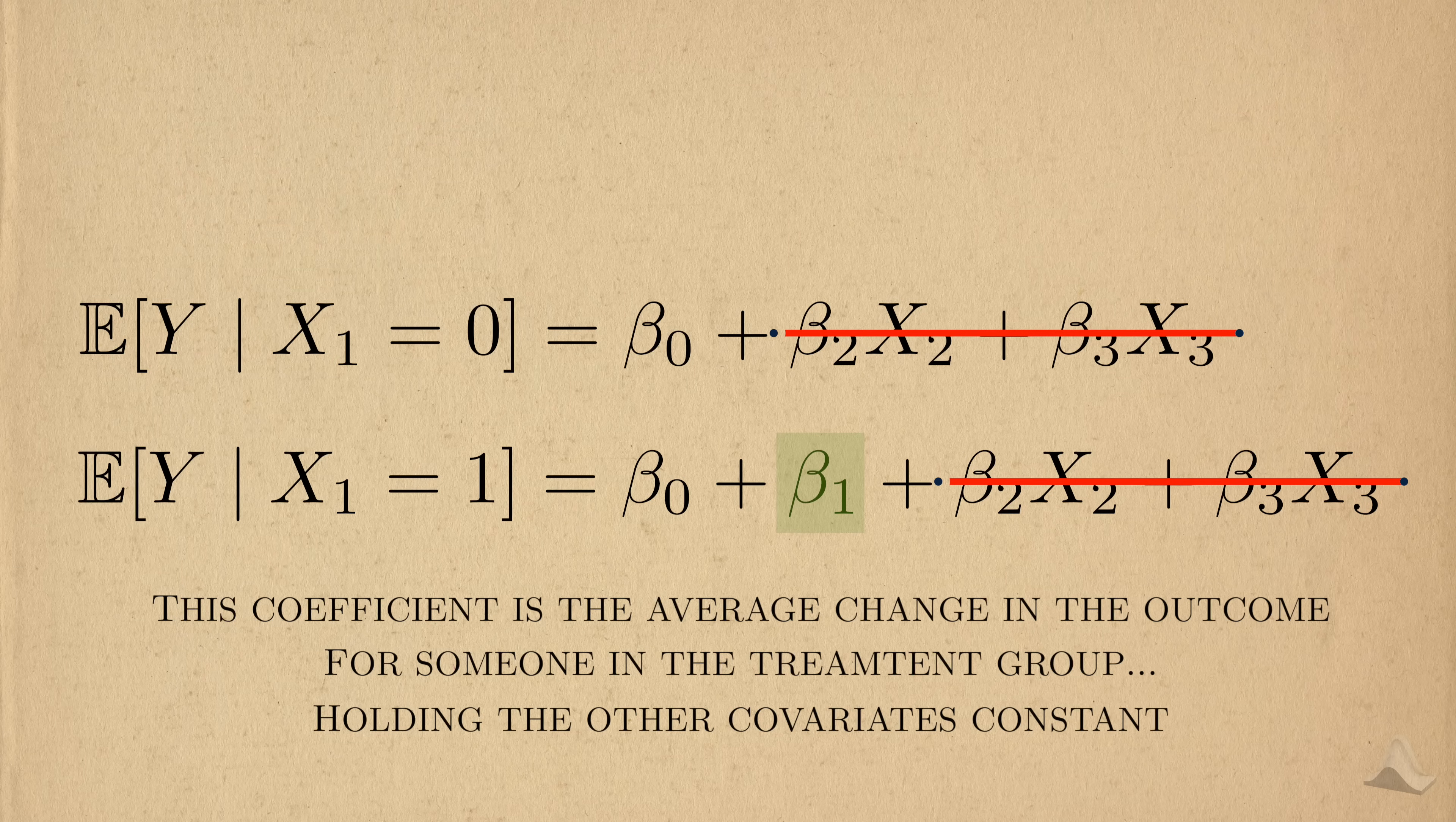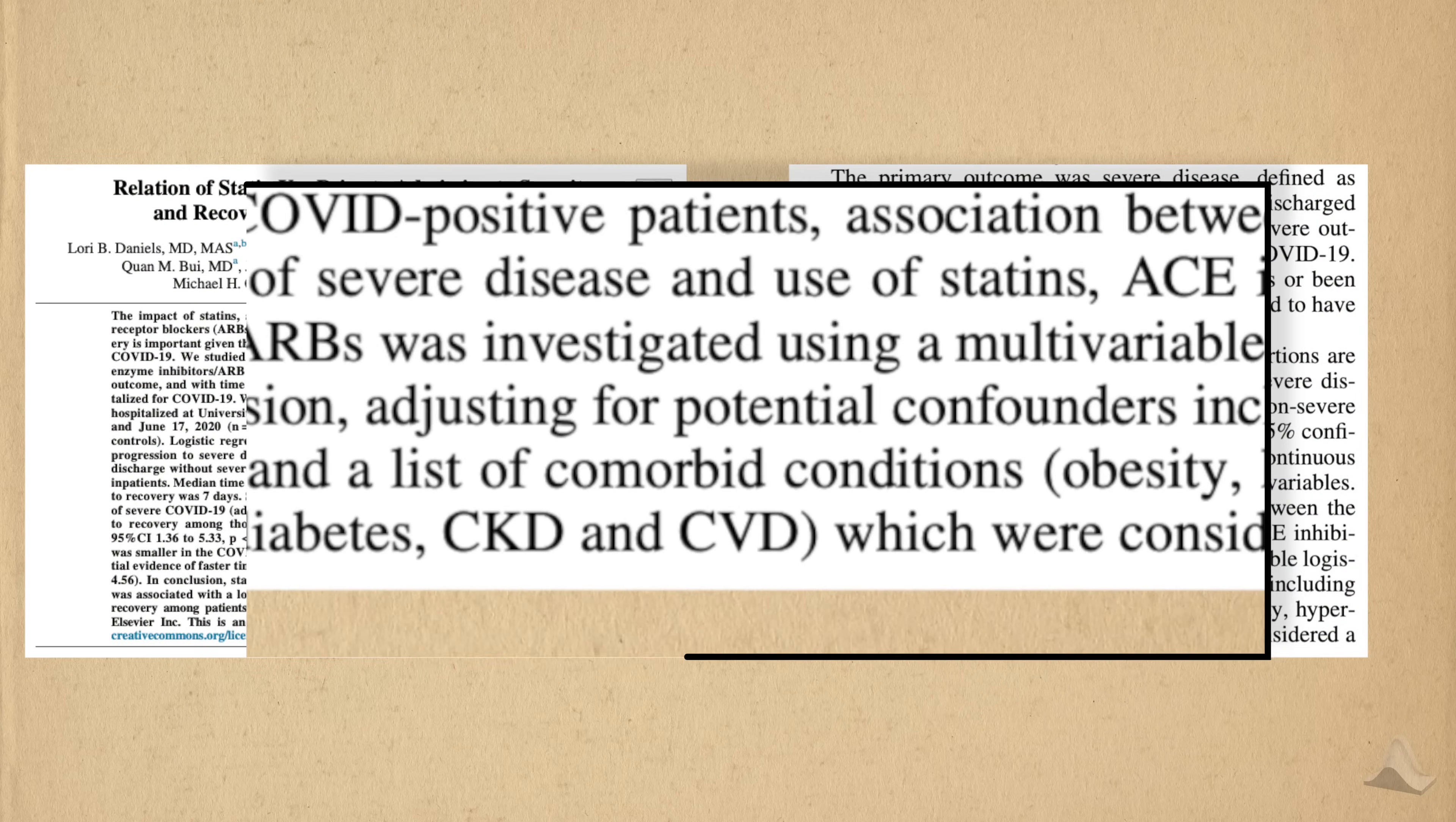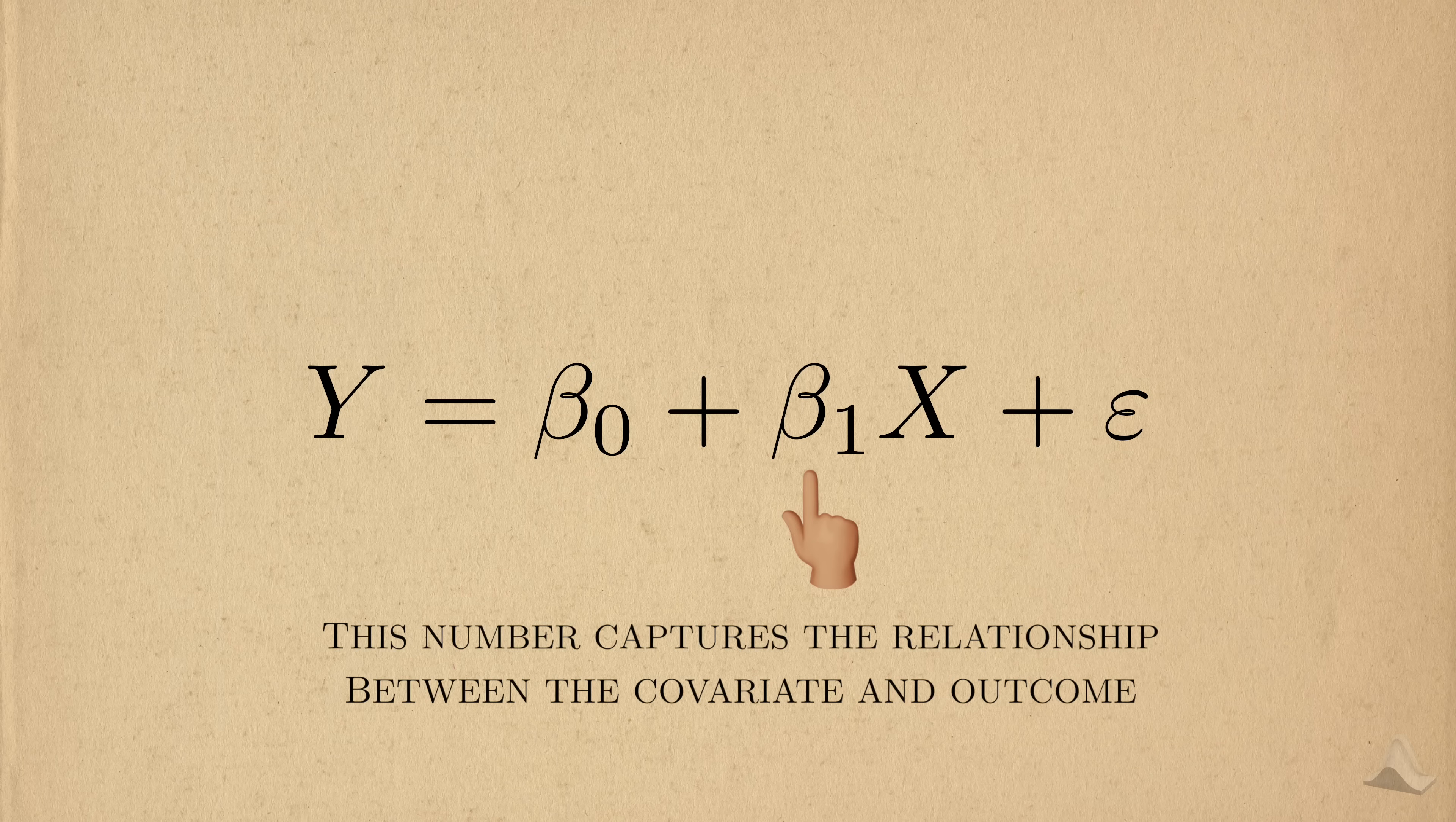By requiring the other covariates to be constant, we interpret a single coefficient to be the average change in the outcome for a unit change in the covariate holding the other covariates constant. Or more intuitively, among people sharing the same set of covariates. This might also be phrased as having adjusted for sex and hours of exercise. So when you hear adjusted for or held constant, that's usually a nod to the fact that some kind of regression was used.